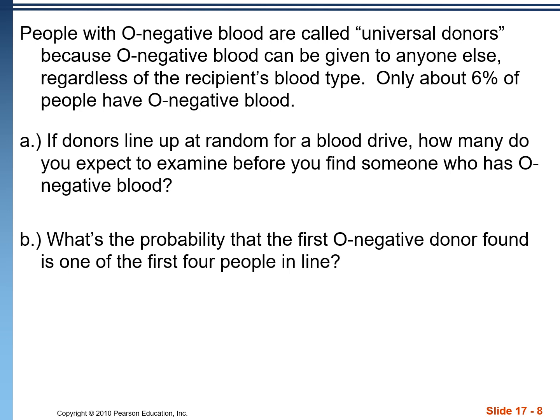It's a geometric model because we don't have a fixed number of trials. Like on the previous problem where it said we were flipping the coin four times, there's nothing like that where it says there's 10 people in line. We might have to wait through a thousand people before we eventually get to our O negative donor.